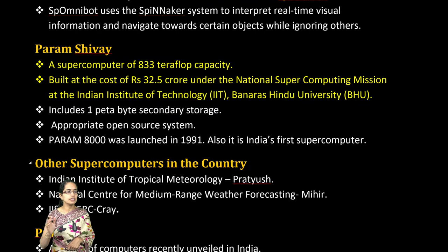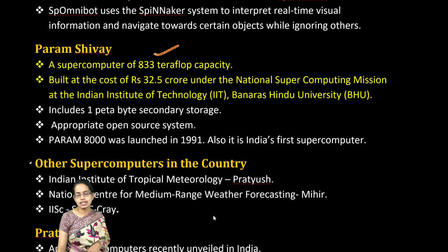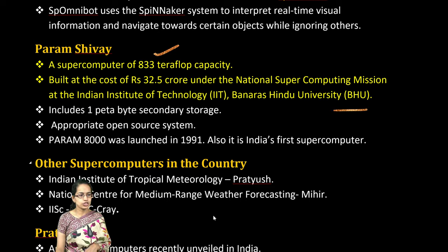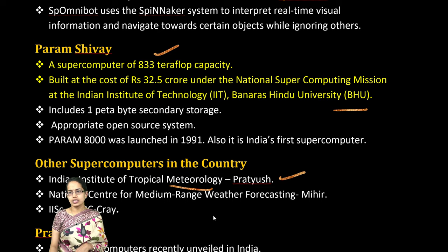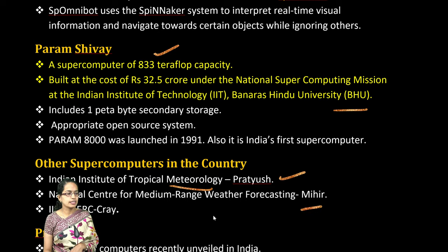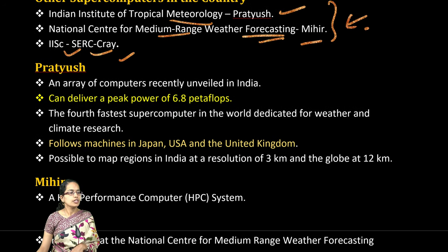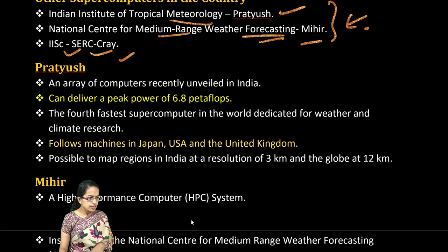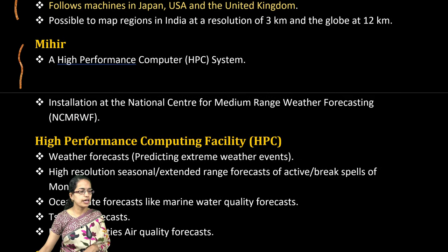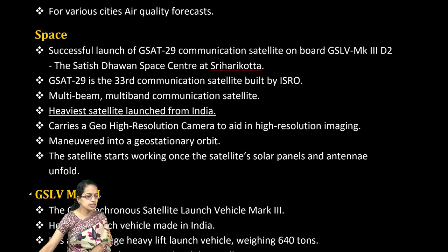Param Shivay is India's first supercomputer, built with 833 teraflop capability by IIT and BHU. Pratyush is used at the Indian Institute of Tropical Meteorology, and Mihir is used at the National Centre for Medium Range Weather Forecasting — both are used for weather monitoring. The Cray supercomputer is used by IISSC Bangalore. The specifications for Pratyush and Mihir and their computing facilities are important.